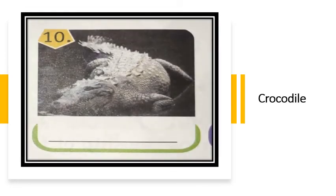Now we come to number ten, and number ten is Crocodile. The spelling of crocodile is C-R-O-C-O-D-I-L-E. Crocodile also lives in water. Sometimes it comes out of the water, but basically it lives in water.